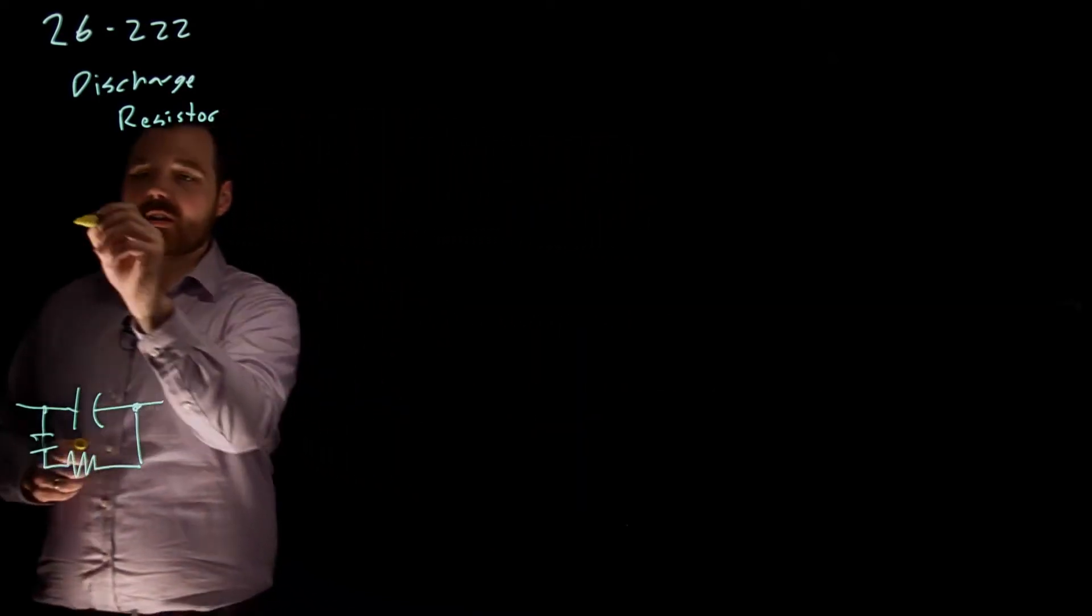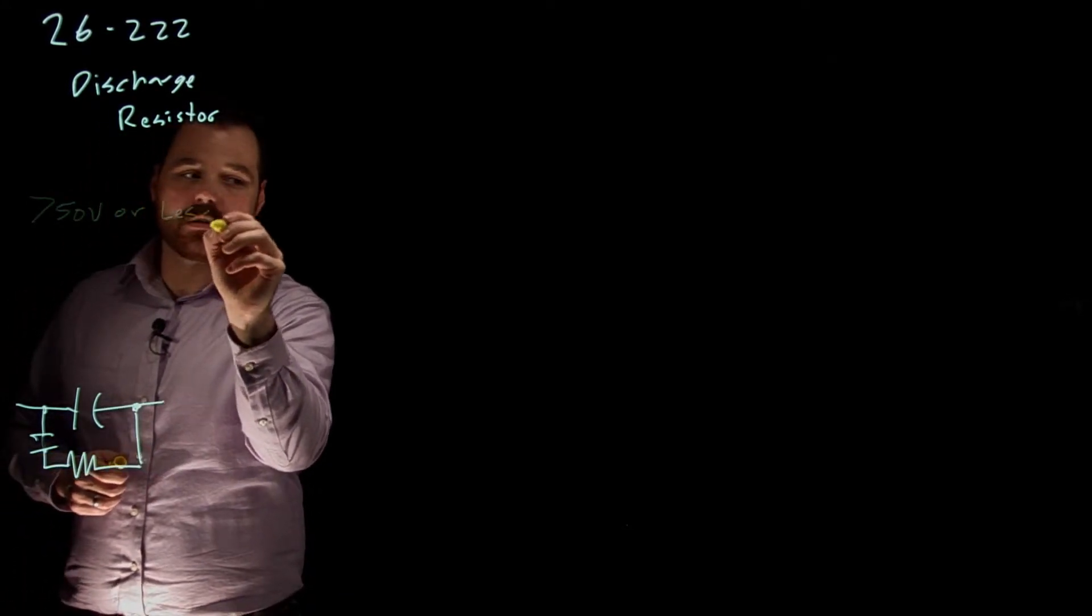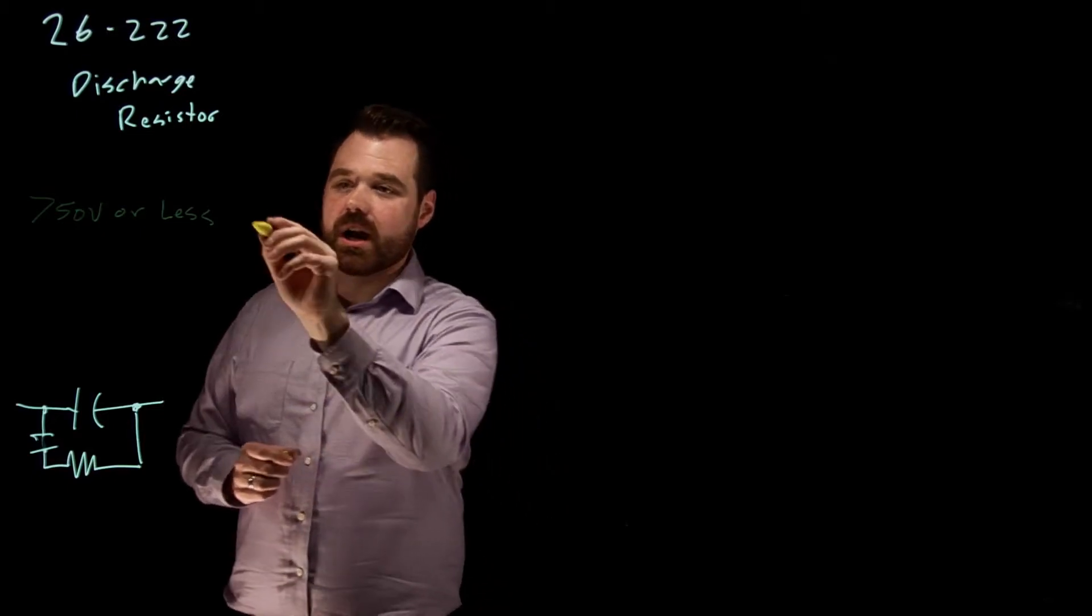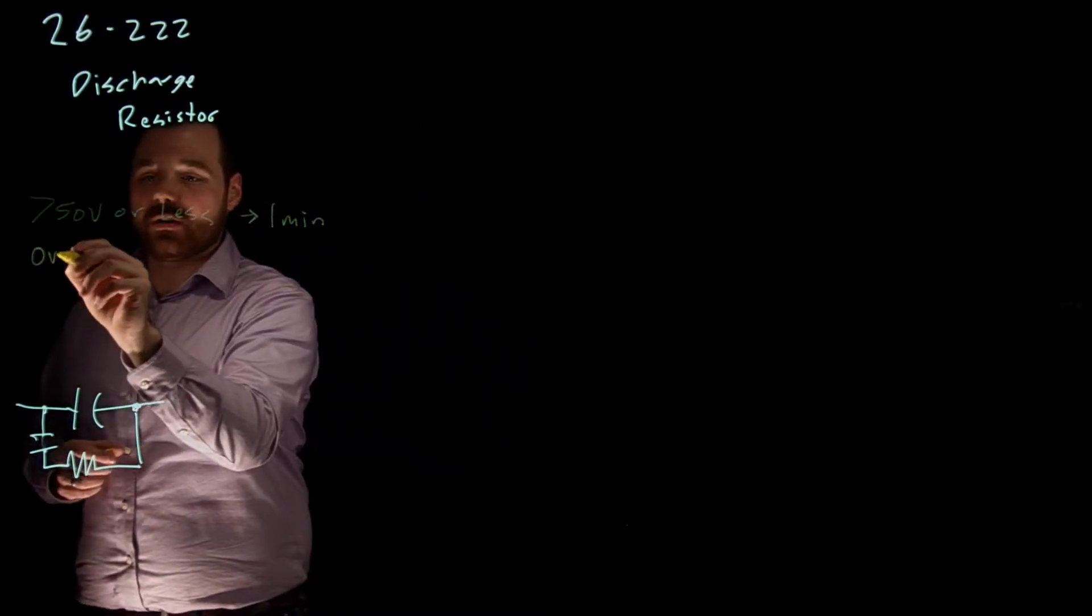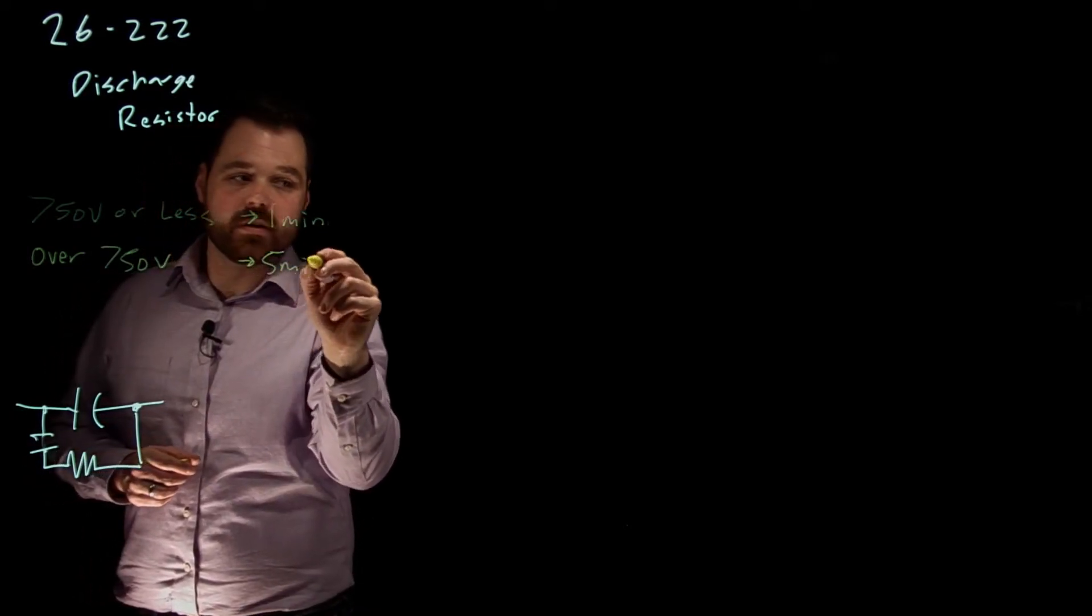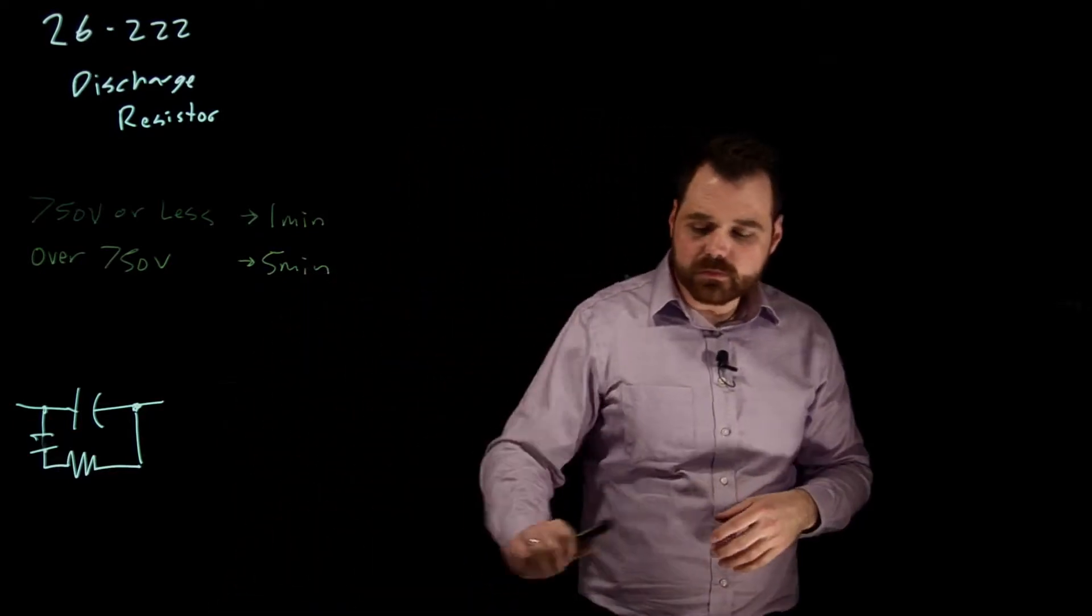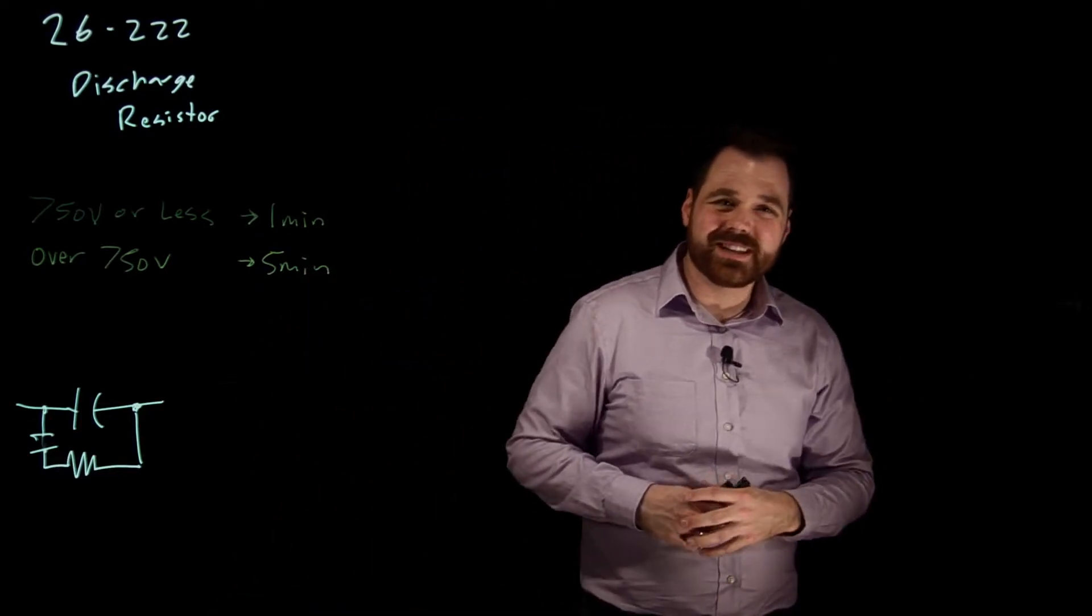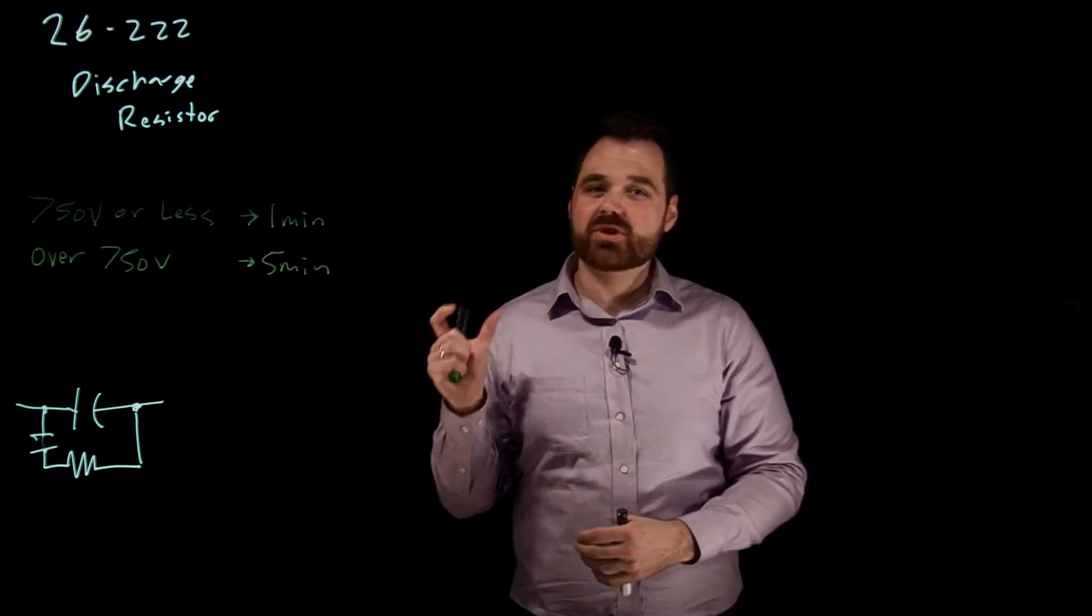Now we talked a little bit, if we are 750 volts or less, we would have one minute. If we are over 750 volts, we have five minutes in order to discharge that capacitor. So that would look a little bit something like this. When we de-energize a capacitor from a circuit, it's now storing a charge.